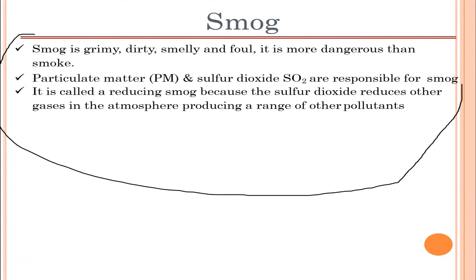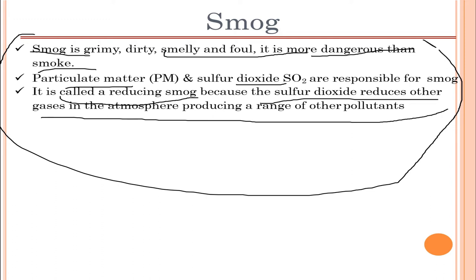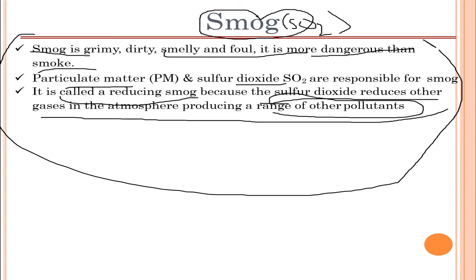In summary, smog is creamy, dirty, smelly, and foul. It is more dangerous than smoke alone. Particulate matter and sulfur dioxide are responsible for smog. It is called 'reducing smog' because sulfur dioxide reduces other gases in the atmosphere, producing a range of additional pollutants, which deteriorates air quality even further.